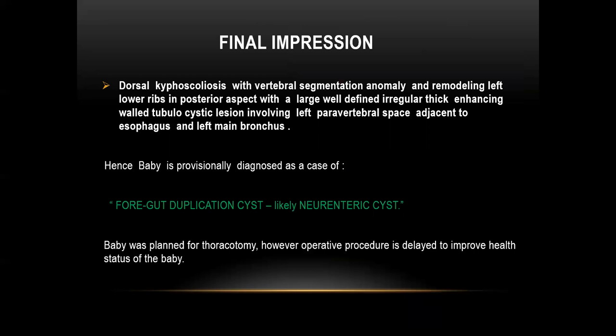The final impression was dorsal kyphoscoliosis with vertebral segmentation anomaly and remodeling of the left lower ribs in the posterior aspects, with a large well-defined irregular enhancing thick-walled tubular cystic lesion involving the left paravertebral space adjacent to the esophagus and left main bronchus. Hence, the baby was provisionally diagnosed as a case of foregut duplication cyst, likely neurenteric cyst. This was considered a neurenteric cyst because along with the cystic lesion, we found vertebral segmentation anomaly. The baby was planned for thoracotomy; however, the operative procedure was delayed to improve the health status of the baby.